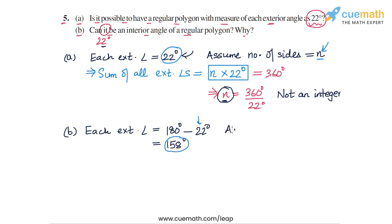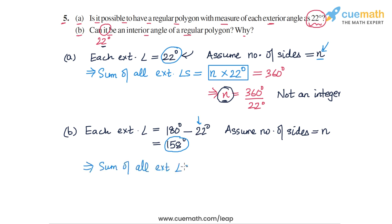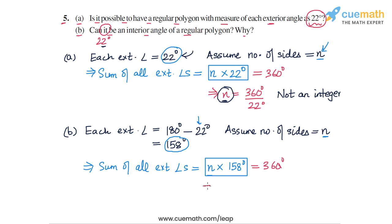Once again, we assume the number of sides of the polygon is N. The sum of all exterior angles will be N × 158 degrees, and this should equal 360 degrees, because we know that in any polygon the sum of the exterior angles is 360 degrees.